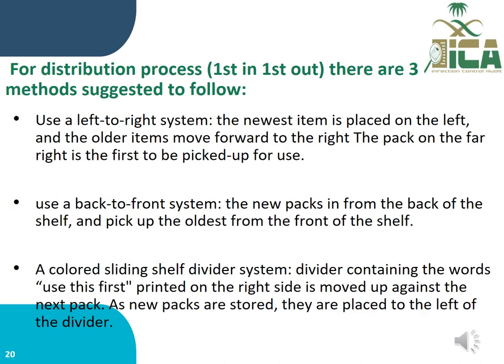For the first-in-first-out distribution process, three methods are suggested: (1) a left-to-right system — the newest item is placed on the left and older items move forward to the right; the item on the far right is the first to be picked for use; (2) a back-to-front system — new items are placed at the back of the shelf and the oldest items are taken from the front; (3) a colored sliding shelf divider system — the divider containing the words 'use this first' is moved up against the next batch, and new stock placed to the left of the divider.